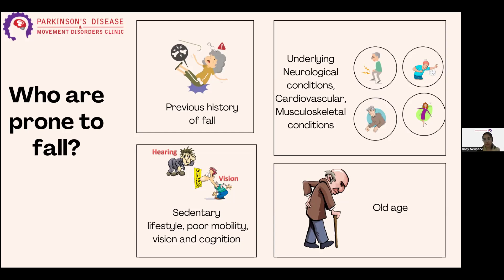Vertigo, where you develop dizziness, is also a risk factor. Musculoskeletal conditions affecting your joints and muscles, like arthritis and fractures, as well as cardiovascular disorders affecting your heart and circulation — such as postural hypotension, where you develop a drop in blood pressure after changing position, or syncope — are also risk factors. Certain medications like sedatives, hypnotics, anti-depressants, or cardiovascular agents like diuretics, which increase urine output, are also risk factors. Additionally, impaired cognition, vision, impaired hearing, low mood, and pain are all risk factors for falls.